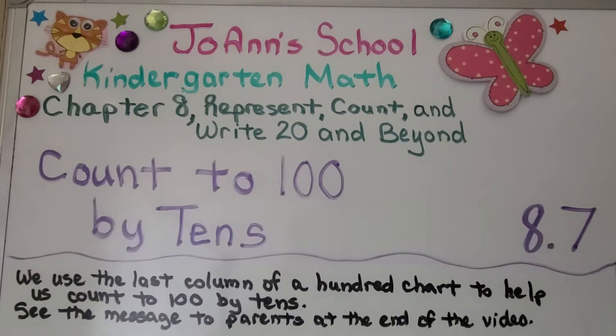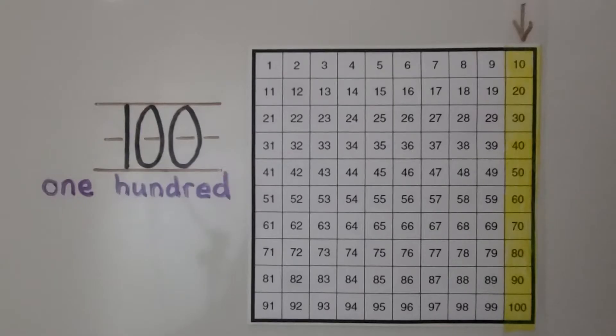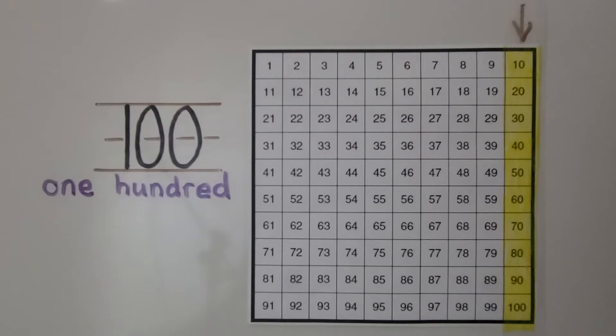Lesson 8.7, Count to 100 by 10s. We use the last column of a hundred chart to help us count to 100 by tens. See the message to parents at the end of the video. In our last video 8.6, we counted to 100 by ones using a hundred chart. When we skip count, we count on by skipping numbers. We skip the same amount of numbers each time, and we can skip count to 100 by tens.